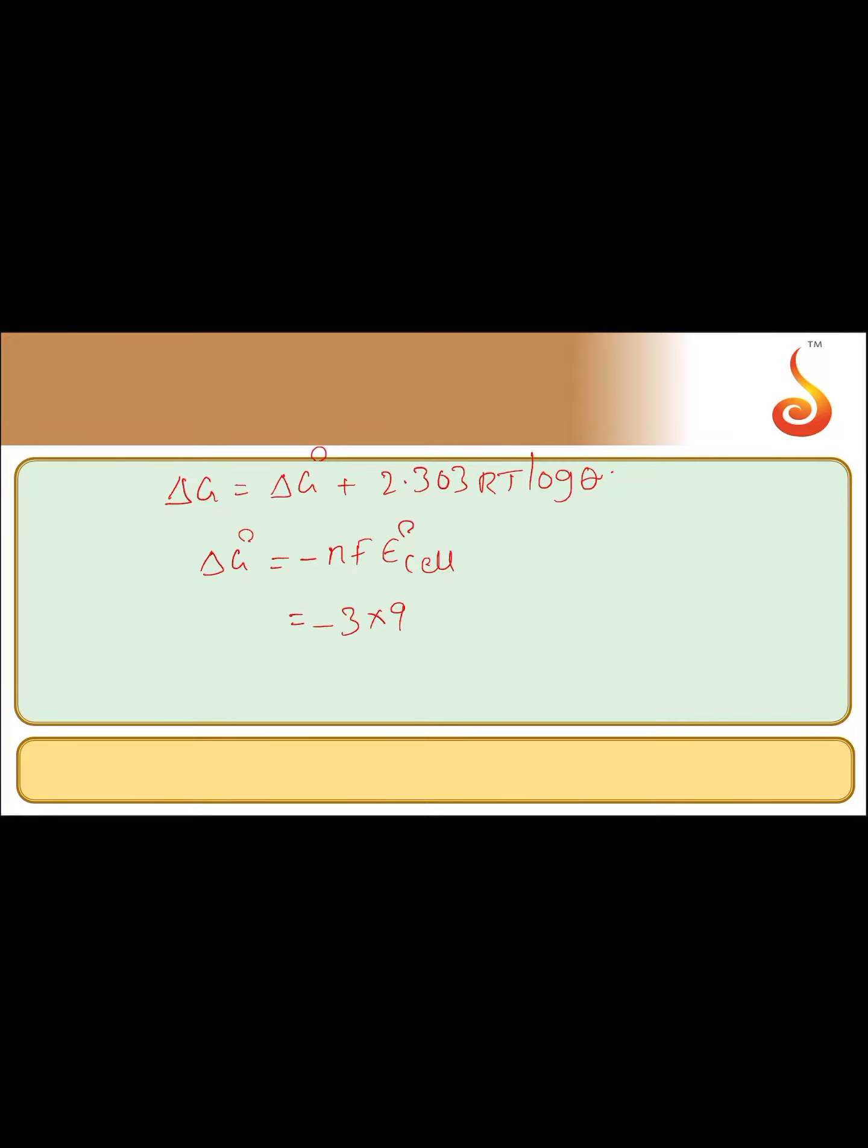F is 96,500. E0 cell value is 1.5. We'll get the value minus 434,250 joules. That is delta G0.